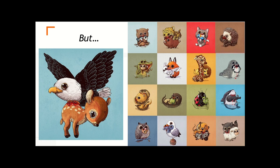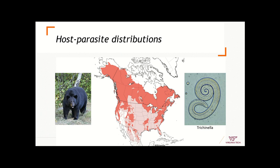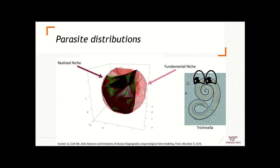Consider the black bear in North America and a parasite found in black bears, Trichinella. People who hunt and eat black bear meat can acquire this parasite. If I'm interested in identifying where Trichinella is, focusing on the entire distribution of the host may not be very informative. The emerging field of infectious disease distributional ecology considers the parasite niche — some believe that parasites can have a niche. Parasites are known not to occur randomly, as shown in examples of viruses occurring in different host species.